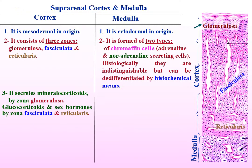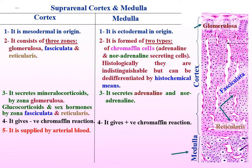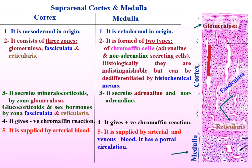Suprarenal cortex secretes mineralocorticoids by zona glomerulosa, glucocorticoids and sex hormones by zona fasciculata and zona reticularis. Suprarenal medulla secretes adrenaline and noradrenaline. Suprarenal cortex gives a negative chromaffin reaction — a histochemical reaction for differentiation from suprarenal medulla — while suprarenal medulla gives a positive chromaffin reaction.